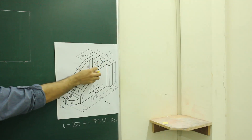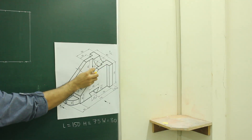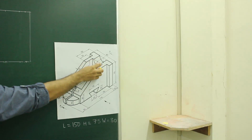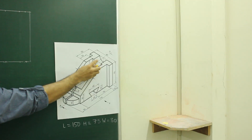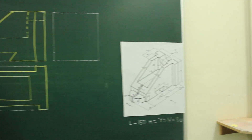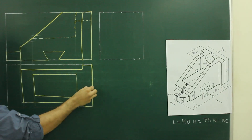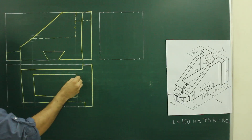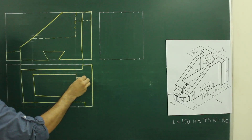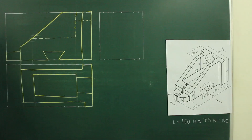Now when you see from the top, this circular portion will appear as a rectangle, so these two lines are important. The radius is 15, so the total diameter would be 30. From the center we will go up by 15 and down by 15 and draw the line.